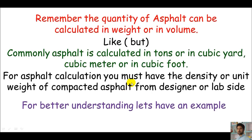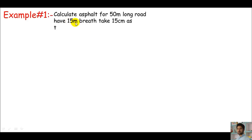Let's do an example. In example one, we are asked to calculate asphalt for a 50 meter long road with 15 meter breadth. Take 15 cm as thickness. We are informed to ignore the camber and use 2330 kg per cubic meter dense asphalt. This is the density of asphalt.